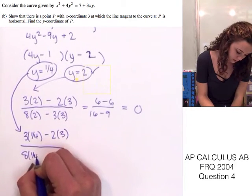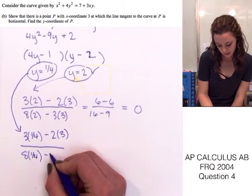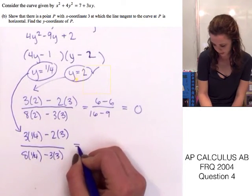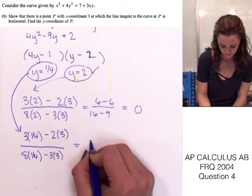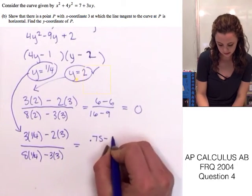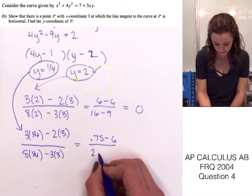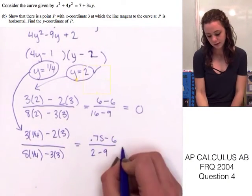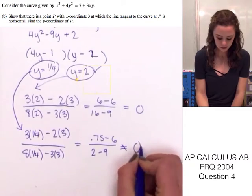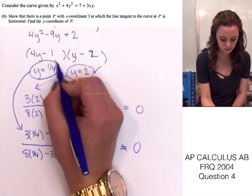All over 8 times y. So, 8 times 1 fourth. All minus 3 times x, which is 3. And, that will give us 0.75 minus 6 over 2 minus 9. And, that's obviously not going to equal 0. So, this one does not work.